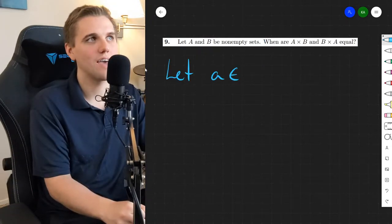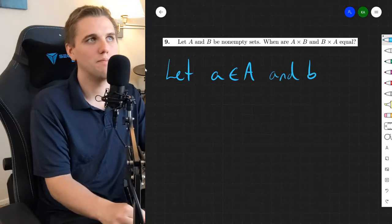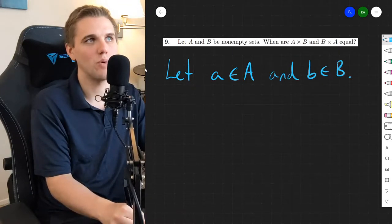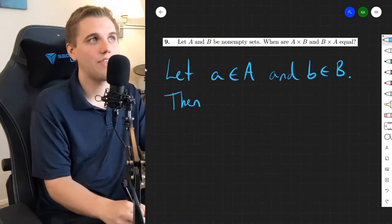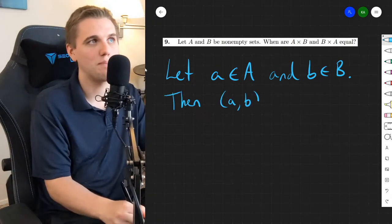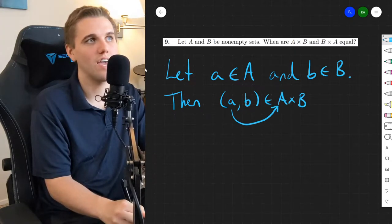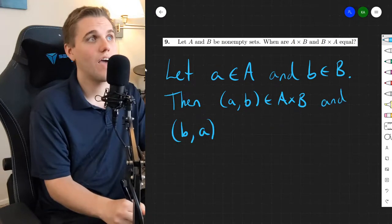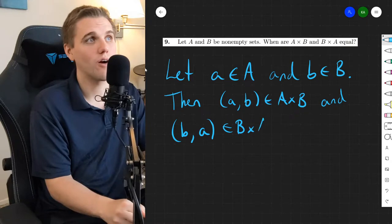So we're going to let a be an element of A and b be an element of B. We know that A and B are non-empty, so we can do this. Now this means that (a,b) is in A cross B, since a is in A and b is in B, and the ordered pair (b,a) is in B cross A.